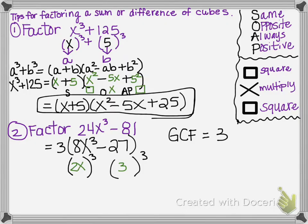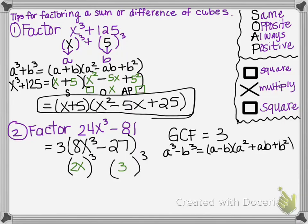Let's write out our formula. Once I determine that I have a difference of cubes — a cubed minus b cubed — I'm going to use the formula: a minus b, times a squared plus ab plus b squared. Let's fill in our numbers. We had a 3 out front, so don't forget that. We have the 3, then the binomial, then the trinomial. Using SOAP: if we started with a minus sign, the first sign is the same — minus. The next sign is opposite — plus. And the last sign is always positive — plus.